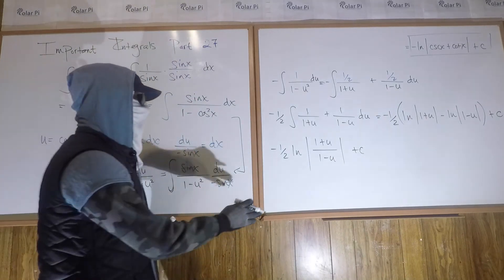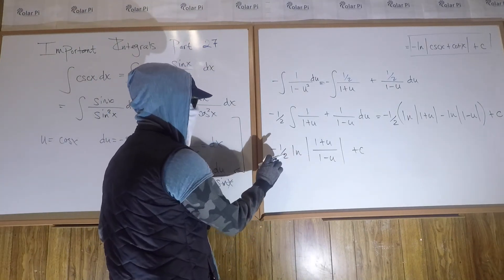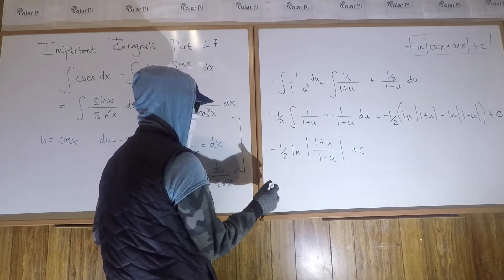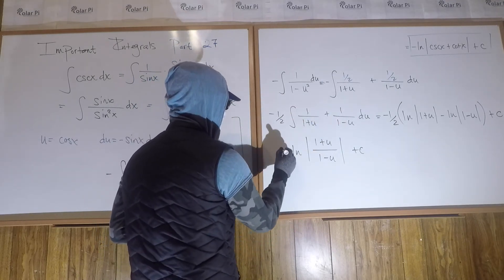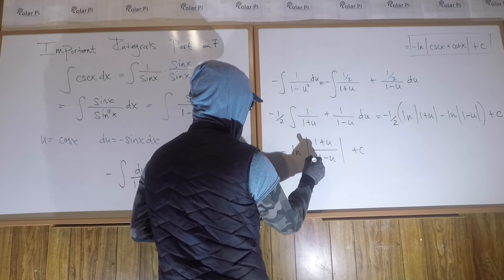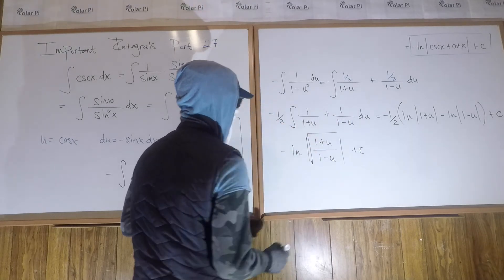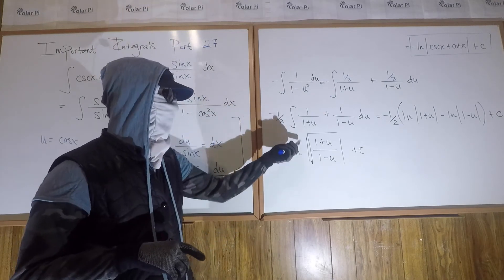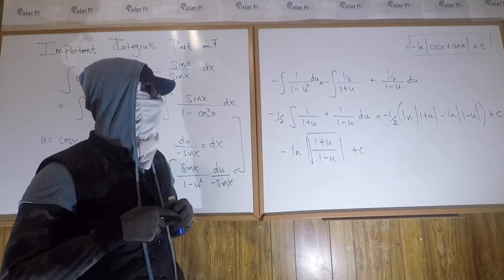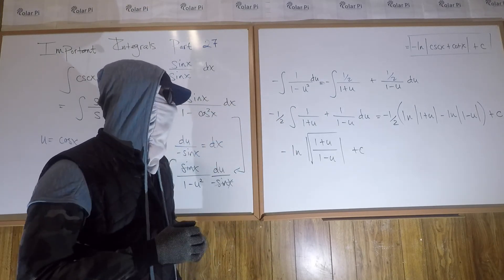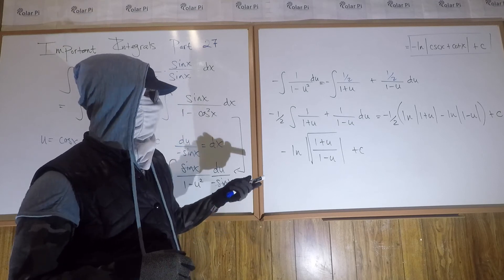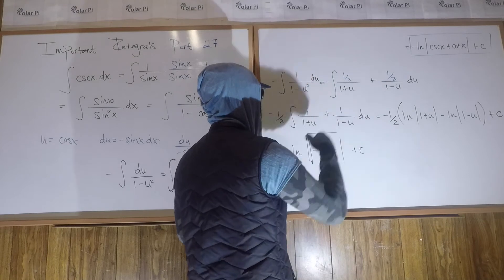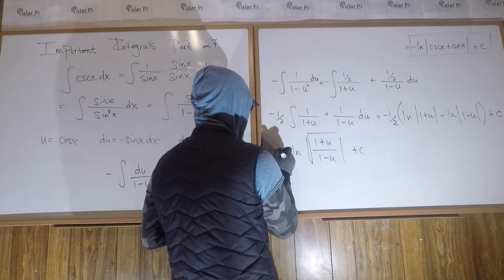We can use the log power rule to put the 1 half as an exponent inside, which means square root. So we could write negative natural log of the absolute value of the square root of (1 plus u) over (1 minus u), plus C. The absolute values are redundant since it's a positive square root, but I'll keep them for insurance. Now if I substitute cos x for u, it's still not the same as the answer I've boxed there, so we've got a bit more work to do.